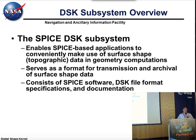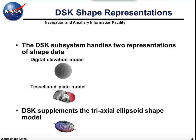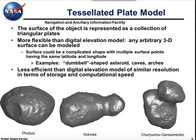The main purpose of the DSK system is to enable SPICE to do the sorts of high-level geometry computations that it does now with ellipsoidal shapes, but with more high-accuracy models. It's also a format for transmission and archival of surface shape data. The system consists of SPICE software, DSK file format specifications, and documentation. There are two principal types of data that it can accommodate: digital elevation models and tessellated plate models. It supplements the existing triaxial shape representations.